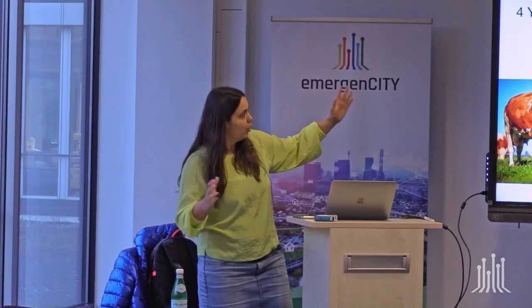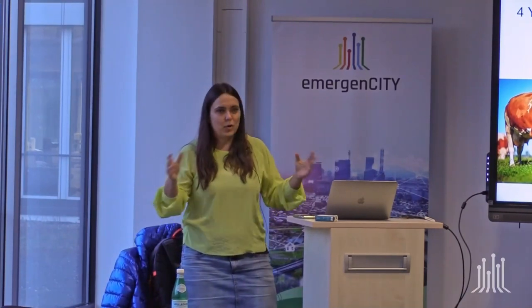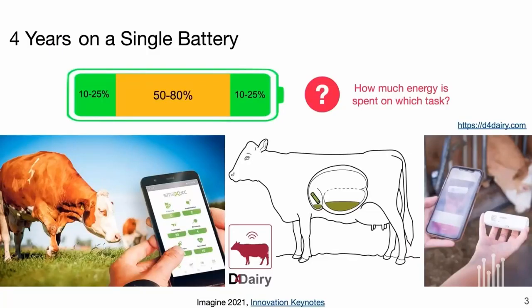What do you think these tasks are? Over the lifespan, one task consumes around 10–25% of the battery, another 50–80%, and the last one again 10–25%. The most battery-consuming task is indeed communication. Over four years, the system sends around 10 megabytes of data. The other two tasks are sensing and computation combined, and standby/sleeping — which also consumes around 10–25%.